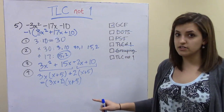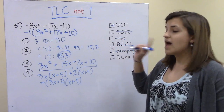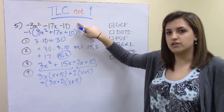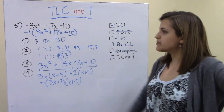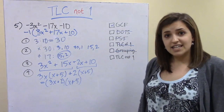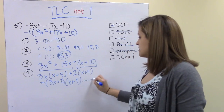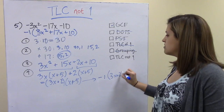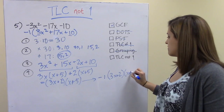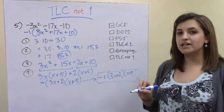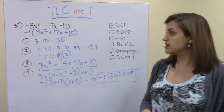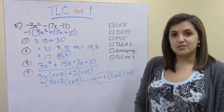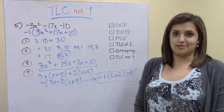We should check our answer, and if we did at this point we'd find it doesn't match what we started with — because we forgot that negative 1. It needs to be brought back down. So the final answer is −1(3x + 2)(x + 5). That's why it's super important to check your answer, because it's so easy to leave that off. Now try the problems at the bottom of your guided notes.